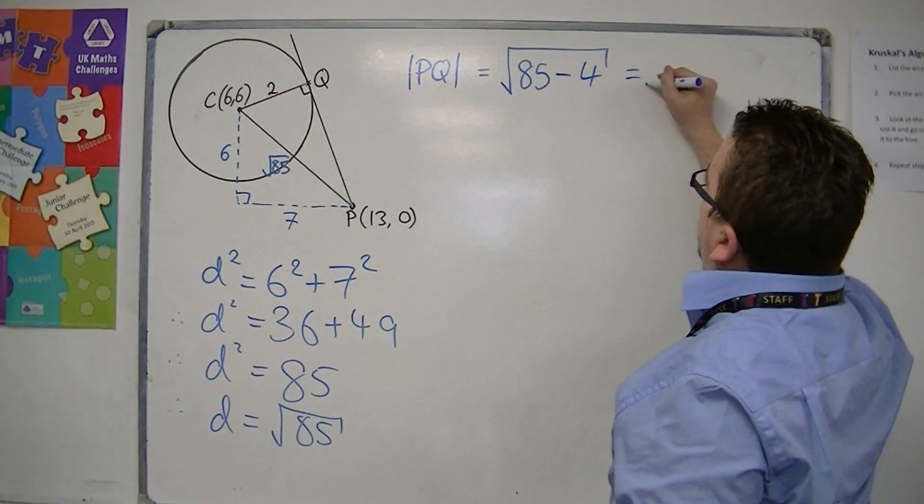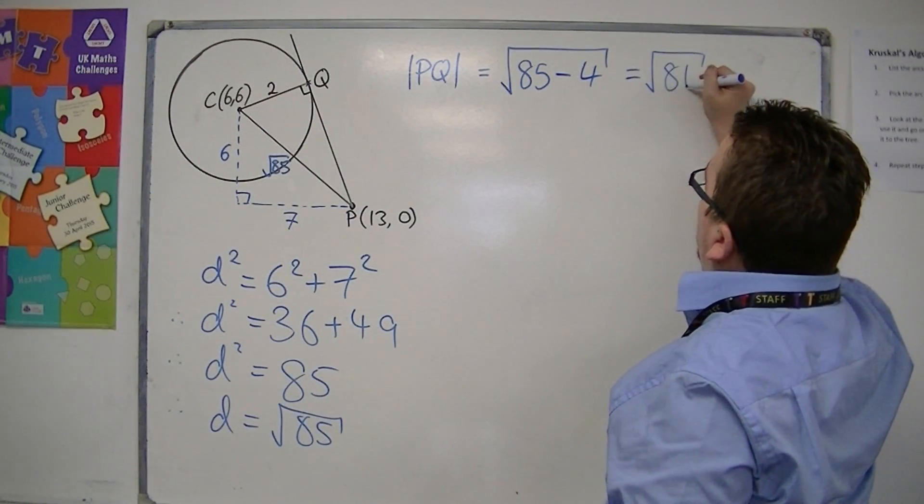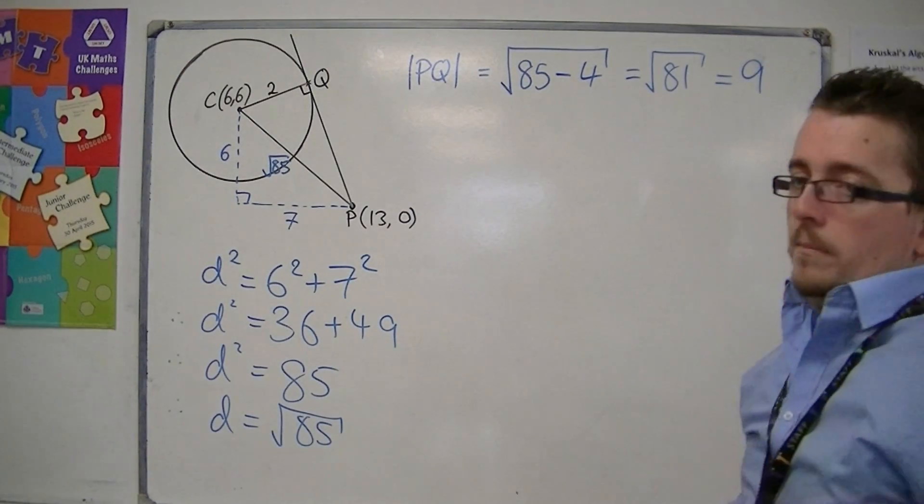So in actual fact, this is the square root of 81, and so the length of PQ must be 9.